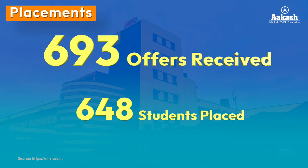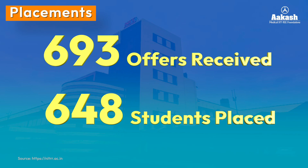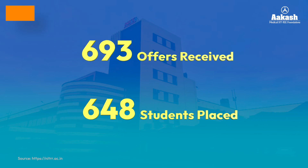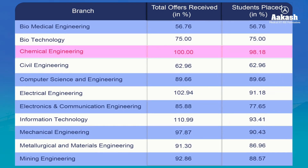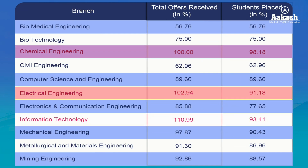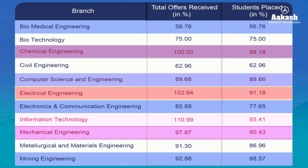In the 2021–22 session, a total of 693 offers were received, and 648 students were successfully placed. Branch-wise, 98% of students were placed from Chemical Engineering, 91% from Electrical Engineering, 93% from Information Technology, 90% from Mechanical Engineering, and 89% from the Computer Science branch.